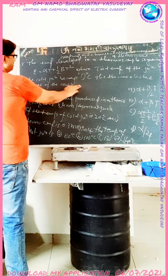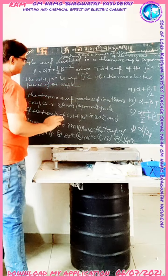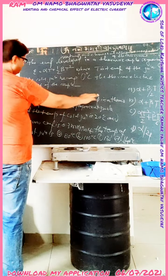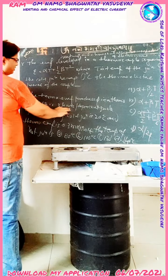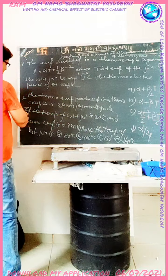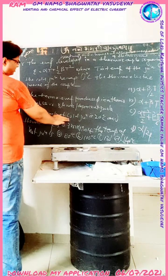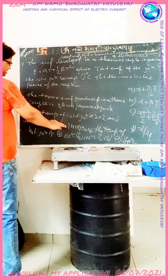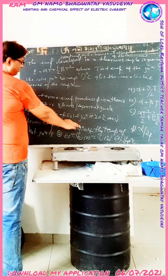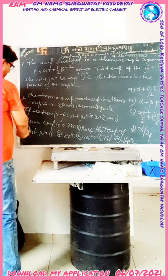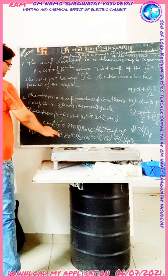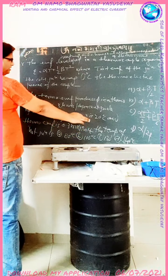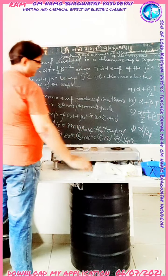The thermoelectric power of this couple is asked, with four options given. The second part states: the thermo-EMF produced in the thermocouple is 3 microvolt per degree centigrade. If the temperature at the cold junction is 20 degrees centigrade and the thermo-EMF is 0.3 millivolt, find the temperature of the hot junction. Options: 80°C, 100°C, 120°C, or 140°C.